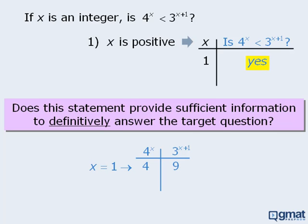Let's try another value for x. If x is positive, x could equal 4. Let's go down here to compare 4 to the power of x with 3 to the power of x plus 1 when x equals 4. If x equals 4, then 4 to the power of x equals 4 to the power of 4, which equals 256. And 3 to the power of x plus 1 equals 3 to the power of 5, which equals 243. So when x equals 4, the answer to our target question is no — 4 to the power of x is not less than 3 to the power of x plus 1.